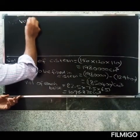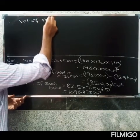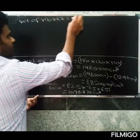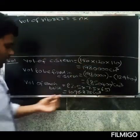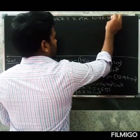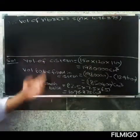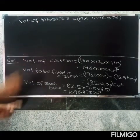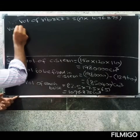Therefore, volume of n bricks equals n into 1,096.875. If we have n bricks, then volume of n bricks equals n times volume of each brick.